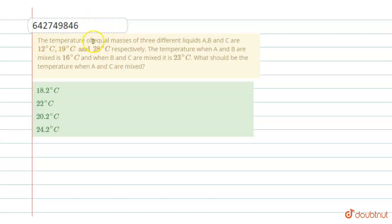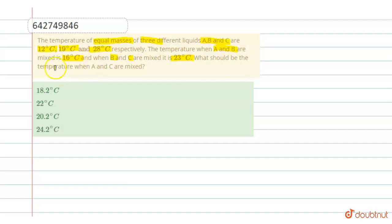Hello students. Here is the equation: the temperature of equal masses of three different liquids A, B, and C are 12°C, 19°C, and 28°C respectively. The temperature when A and B are mixed is 16°C. When B and C are mixed, it is 23°C.